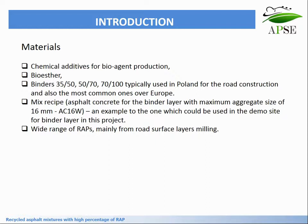The materials used in the project included a chemical additive for bio-agent production — bio-ester — and three binders typically used in Poland for road construction and in most European countries: 35/50, 50/70, and 70/100. The mix recipe for the HMA was an asphalt concrete for the binder layer with maximum aggregate size of 16mm, denoted as AC16W, as an example of what could be used in the demo site. A wide range of RAP sources were tested, mainly from road surface layers.